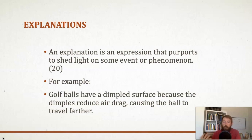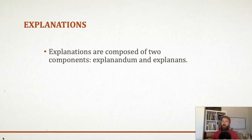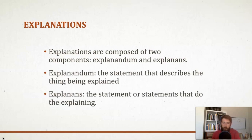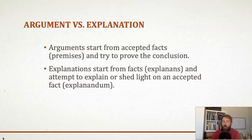So we take something we already know to be true and give an explanation for why it is the case. Just like arguments have two components — the premises and the conclusion — explanations have two components as well: the explanandum and the explanans. The explanandum describes the thing being explained, and the explanans is the thing that does the explaining. In our golf ball example, the explanandum is that golf balls have dimples — that's the thing being explained — and the explanans is that the dimples reduce air drag. The key difference is that arguments try to prove a surprising conclusion, while explanations shed light on why something already accepted as true is the case.